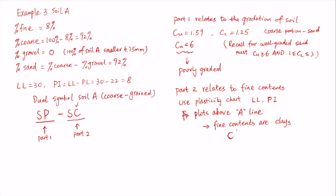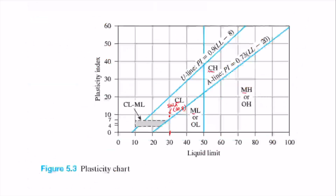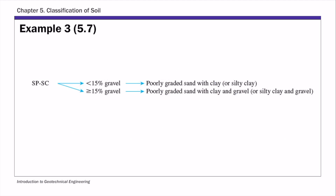That gives us the complete group symbol for soil A: SP-SC, a dual symbol. Finally, we determine the group name using the group name figure. For soil A with group symbol SP-SC and 0 percent gravel, we take the upper route. The group name is poorly graded sand with clay or silty clay. The complete classification for soil A is group symbol SP-SC and group name poorly graded sand with clay or silty clay.